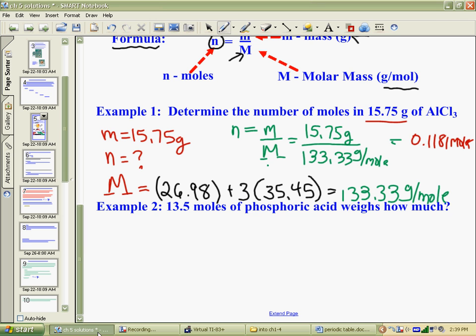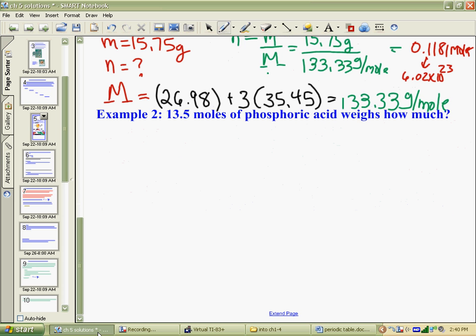That is contained in 15.75 grams of aluminum chloride. If you wanted to know how many particles that was, you would multiply that by 6.02 times 10 to the 23, and that would give you an approximate number of how many molecules of aluminum chloride would be there. So if we do a different example, just so we can rearrange the formula a bit.